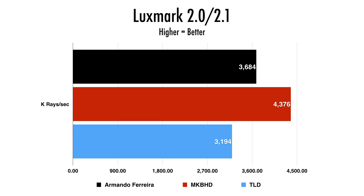Now Luxmark — this is where I think the Mac Pro really should have shined, and it sort of did. Remember, I was only doing GPU performance while the Mac Pro was doing CPU and GPU combined, so it did have an advantage, and it clearly showed with 4,376. Interestingly, TLD's score was 3,194 — a notable gap, which I think has a lot to do with the GPUs. If you're looking to buy a Mac Pro, one thing I would definitely upgrade is the GPUs, because you can see the difference in GPU performance clearly in this OpenCL test.